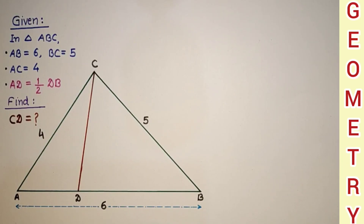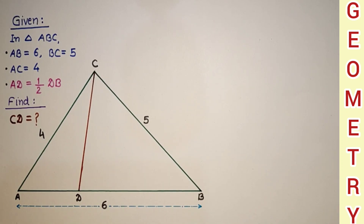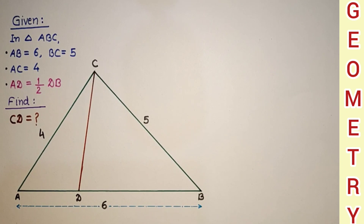Hello friends, dear students and respected viewers, once again welcome to my channel. In this question, triangle ABC is given with sides AB, BC, and CA equal to 6, 5, and 4 respectively according to the diagram. AD is half of DB, and we have to find the length of CD. We have two solutions: one using Stewart's theorem and the other using Heron's formula.